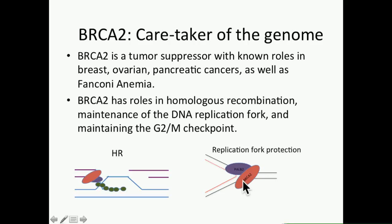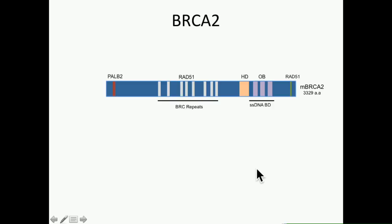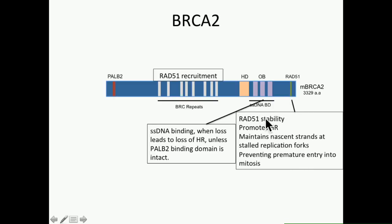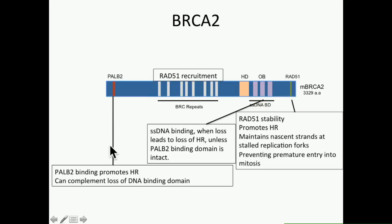BRCA2 also maintains the G2M checkpoint. BRCA2 itself is a huge protein with 3,329 amino acids and many interacting partners. I'm only showing a few different BRCA2 domains here. We have the BRC repeats, which are very important in RAD51 recruitment. We have the separate RAD51 domain, which is important in RAD51 stability and promotes homologous recombination. This region has also been shown to help maintain nascent strands at stalled replication forks and helps prevent premature entry into mitosis. The single-stranded DNA binding domain, when lost, leads to a loss of homologous recombination unless the PALB2 binding domain is intact. The PALB2 binding domain itself is important in promoting homologous recombination and has been shown to complement the loss of the DNA binding domain.